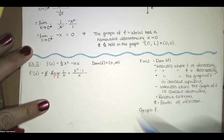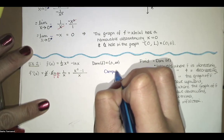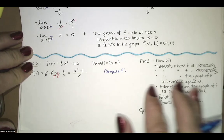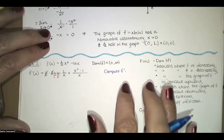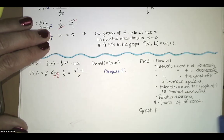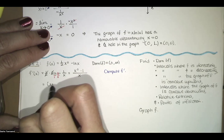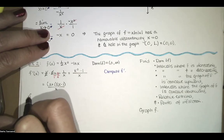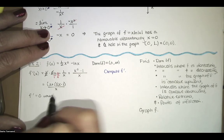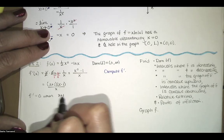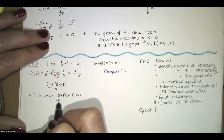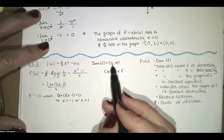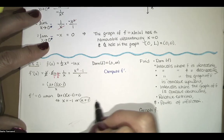We compute f prime when we want to find the critical numbers. Critical numbers are where the derivative is undefined or zero, but they have to be x values in the domain of the function. The numerator factors as a difference of squares: x plus 1 times x minus 1, all divided by x. Setting the numerator equal to zero gives x equals negative 1 or x equals positive 1, but since the domain is 0 to infinity, x equals 1 is the only critical value.